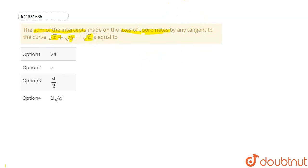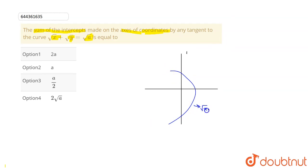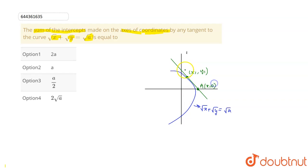To solve this question, let's suppose this is our coordinate system. Let's draw the curve: √x + √y = √a. Now at any point, let's draw a tangent at point (x₁, y₁). This tangent cuts the x-axis at point A, which is (x, 0), and cuts the y-axis at point B, which is (0, y), and O is our origin.